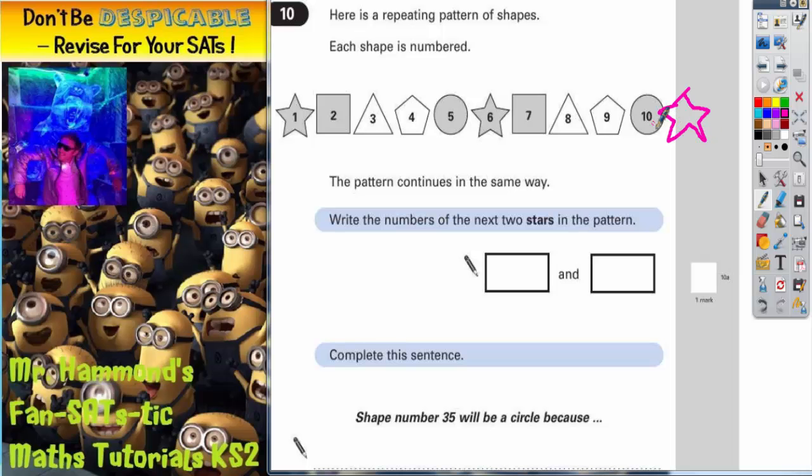If you look at the numbers, the next number would be 11. So we've already got the first three stars in the pattern: the first three stars are 1, 6, and then this one here, which is 11.